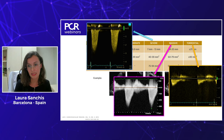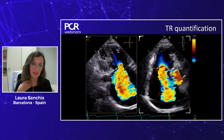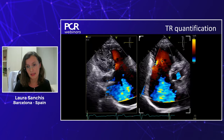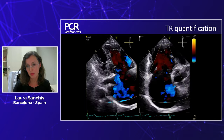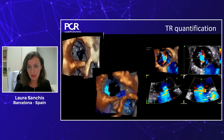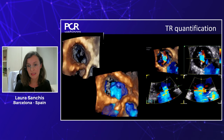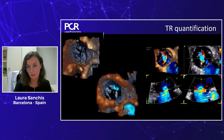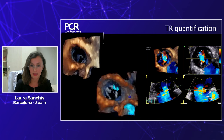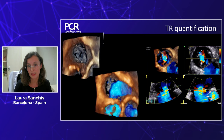In patients with massive or torrential TR with a triangular Doppler, if you have doubts, you need to do a right heart catheter saturation to be sure the patient doesn't have pre-capillary pulmonary hypertension. For quantification, I really like the biplane vena contracta because it's easy to do — just put the biplane on your 3D probe. The PISA can have pitfalls because the orifice area of the TR is not round as in the mitral, so 3D vena contracta area is a better measurement to grade tricuspid regurgitation.